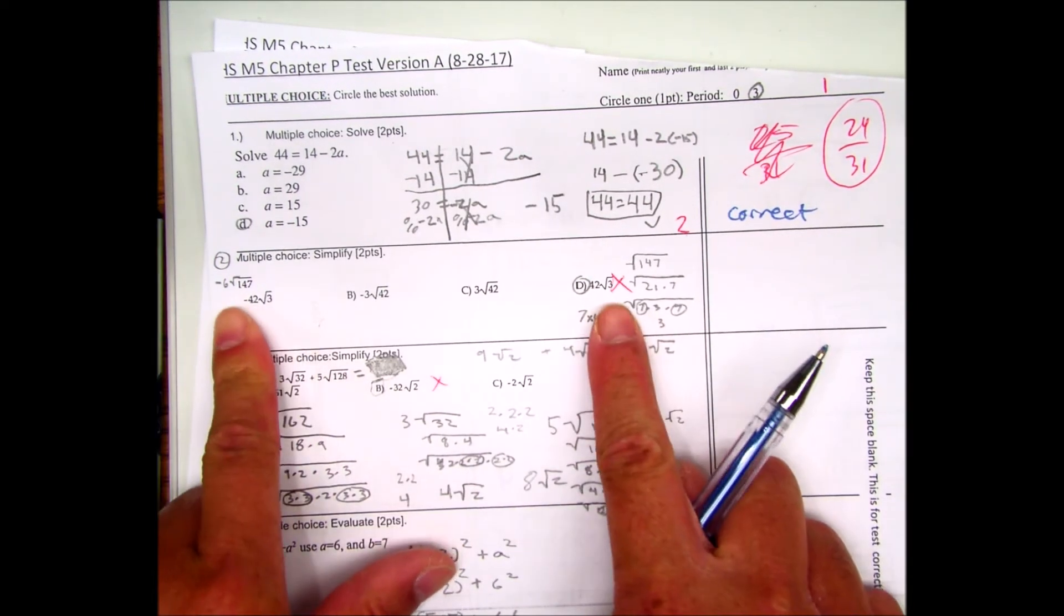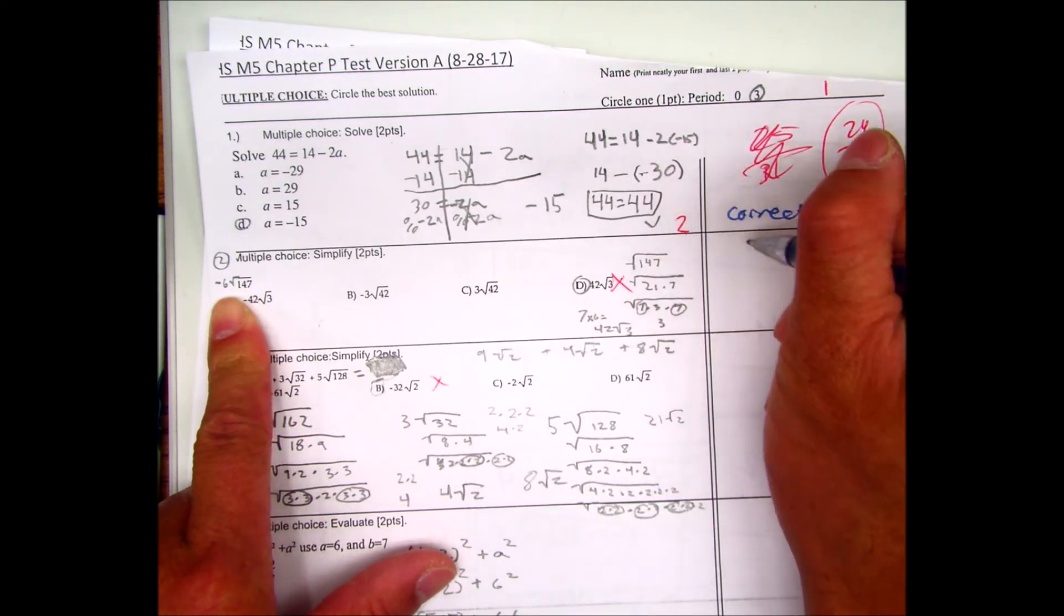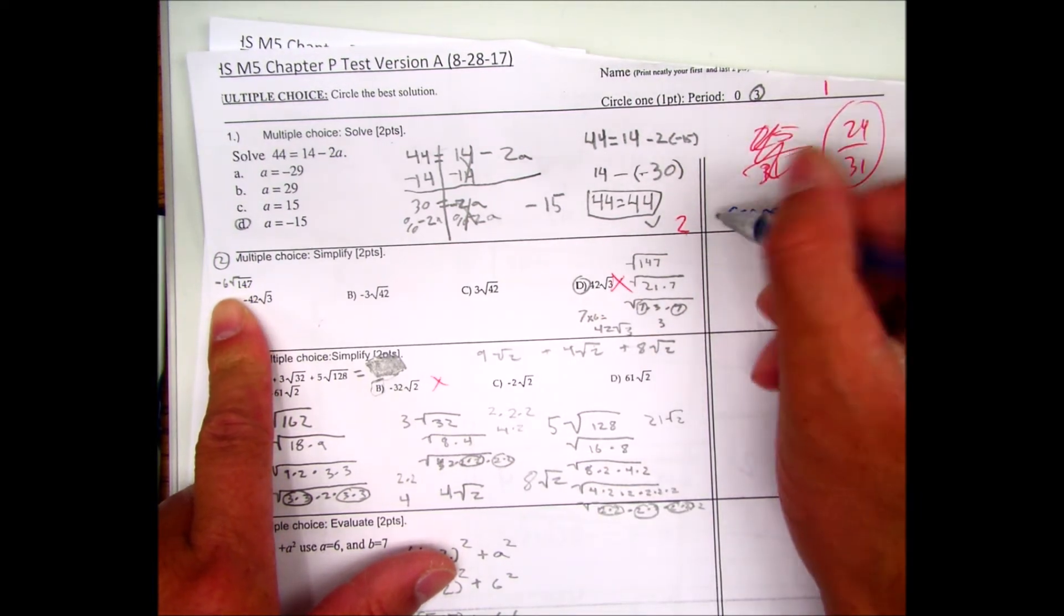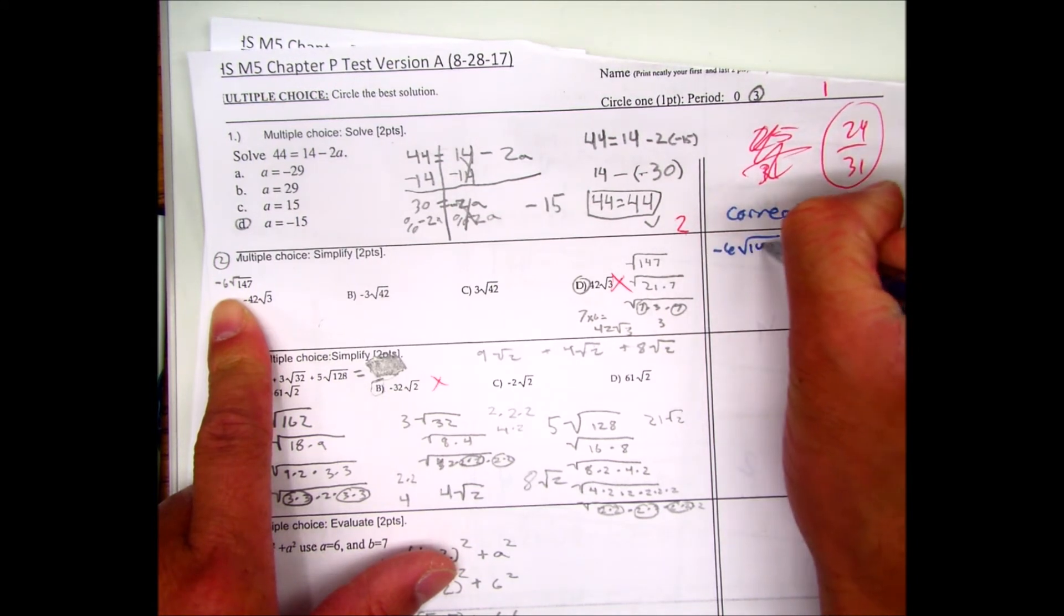But if you miss a problem like this student did, there's an x by the work then you watch the video. Okay? And not only I want you to redo the problem. So negative 6 square root of 7.